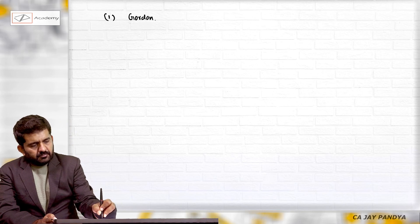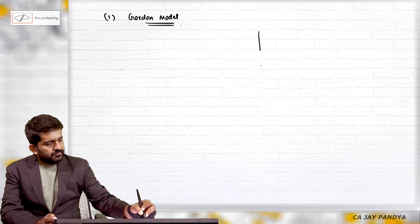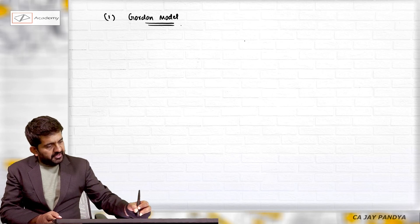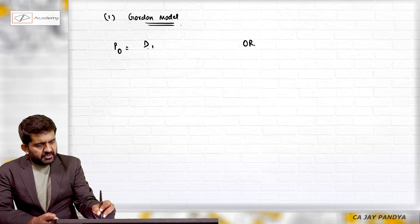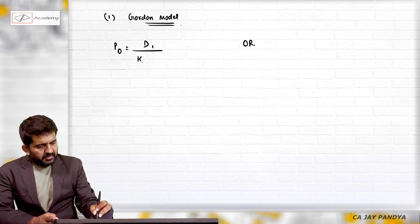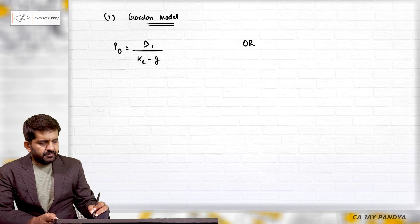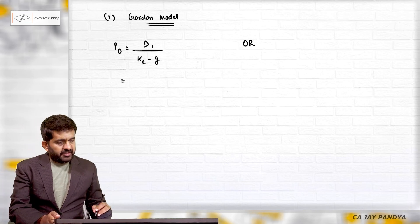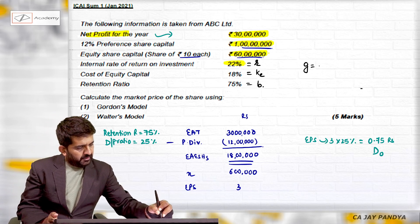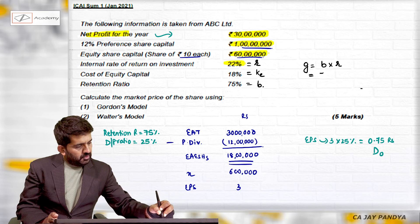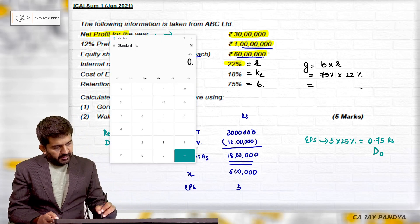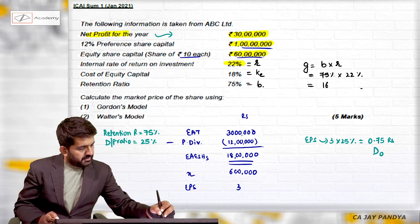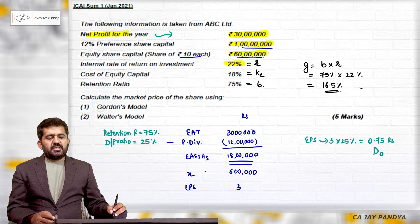Let us find out value of the share by Gordon model. You can do it in the first method or second method. What does Gordon model say? It is D1. What is D1? For that we need to find out the growth rate. How to find out the growth rate? b into r. What is b? 75%. And r is 22%. So 22 into 0.75 is 16.5% - this is the growth rate.